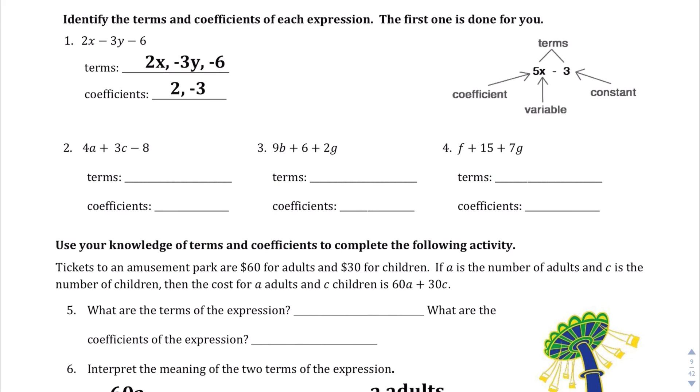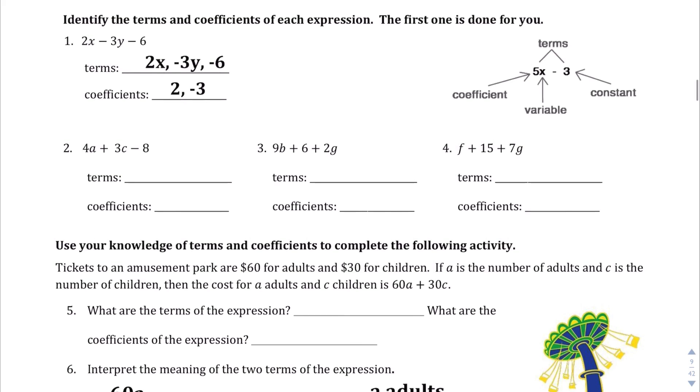Okay, continuing on, we have this expression here: 4a plus 3c minus 8. We are asked to identify the terms and the coefficients. The terms are everything that is separated by a plus or a minus sign. So in this case, this is a term, this is a term, and this is a term right there. So our terms are 4a, 3c, and minus 8. The coefficients are things that are in front of variables, and so we only have two variables here, a and c. So our coefficients are 4 and 3 since 8 is not in front of a variable.